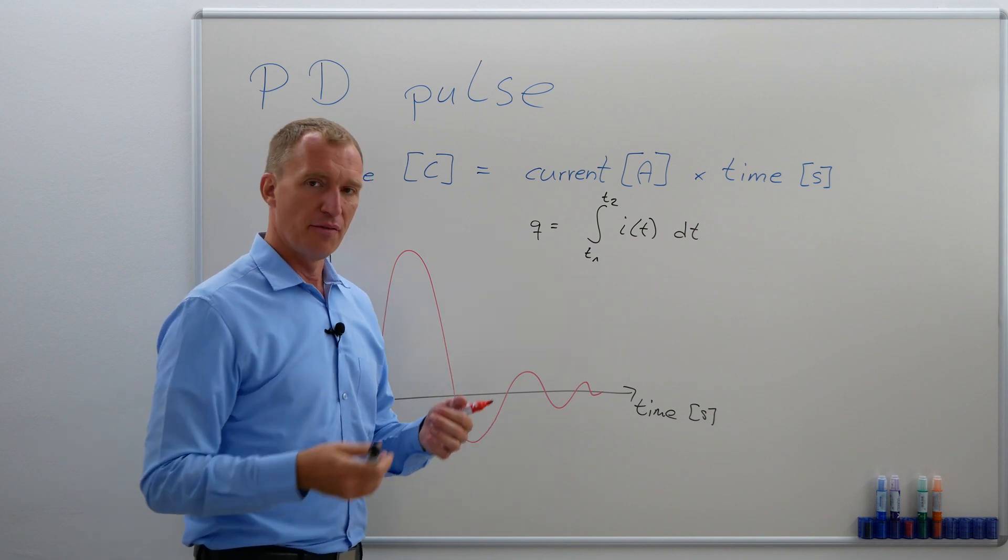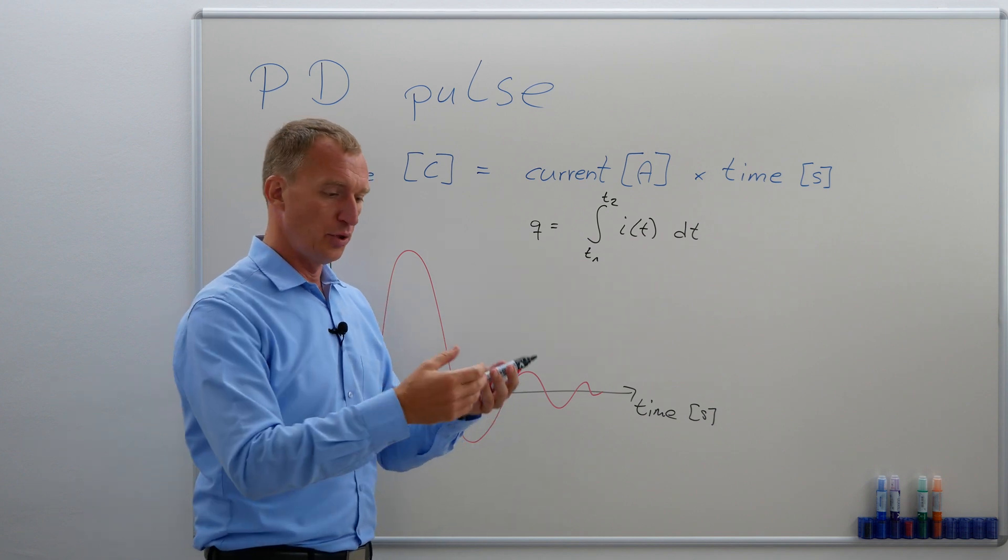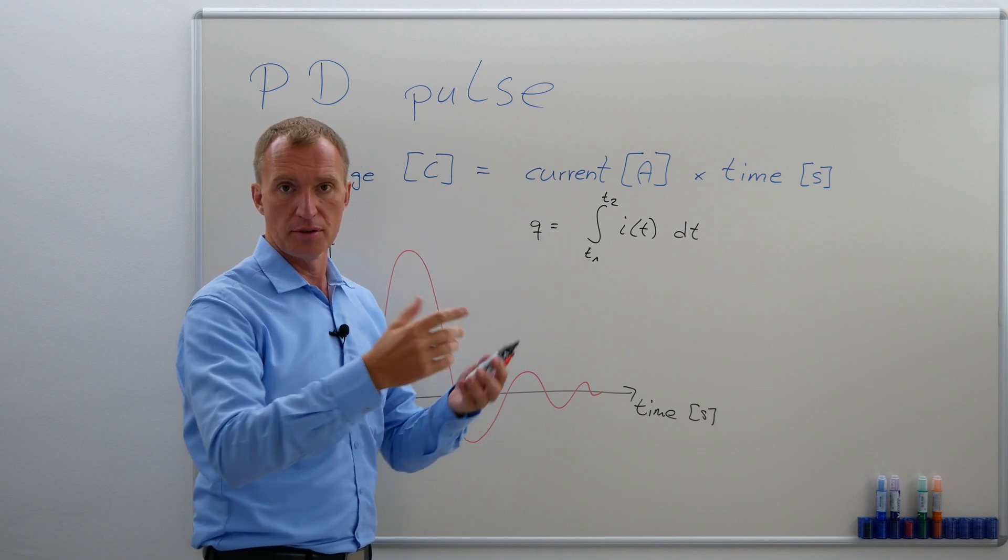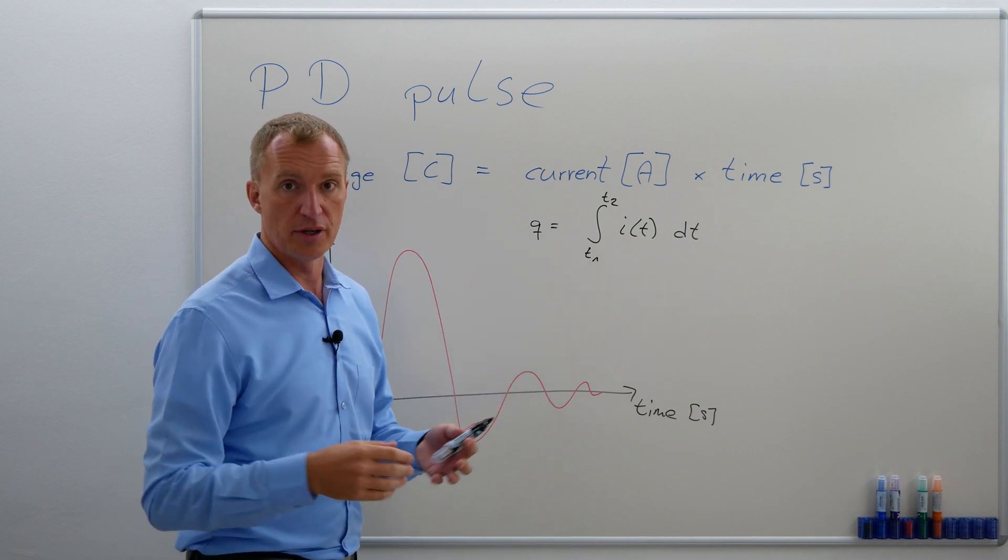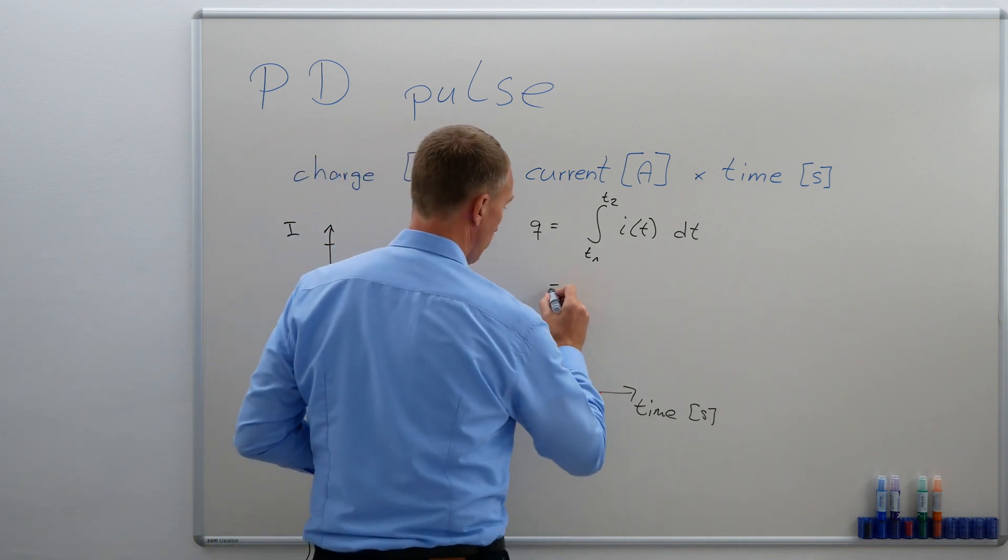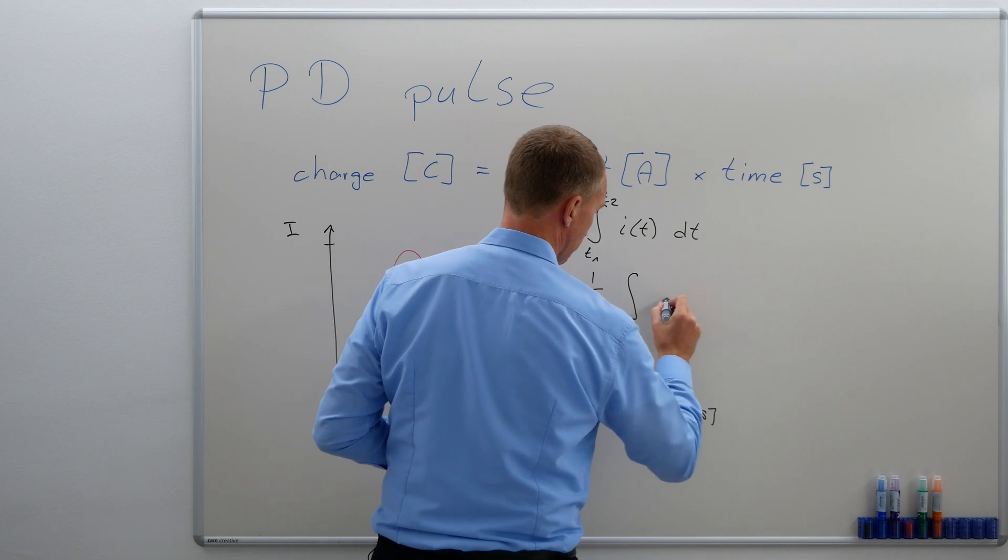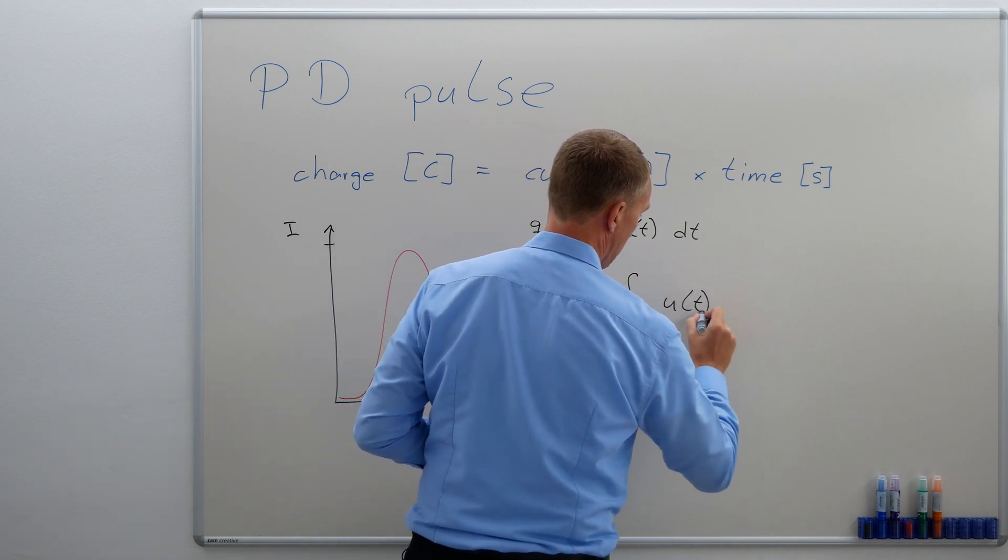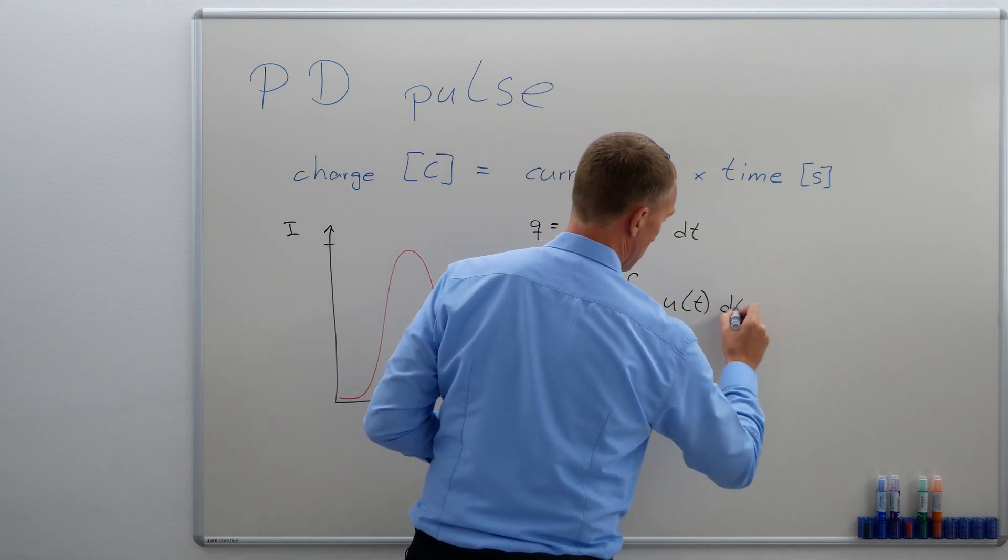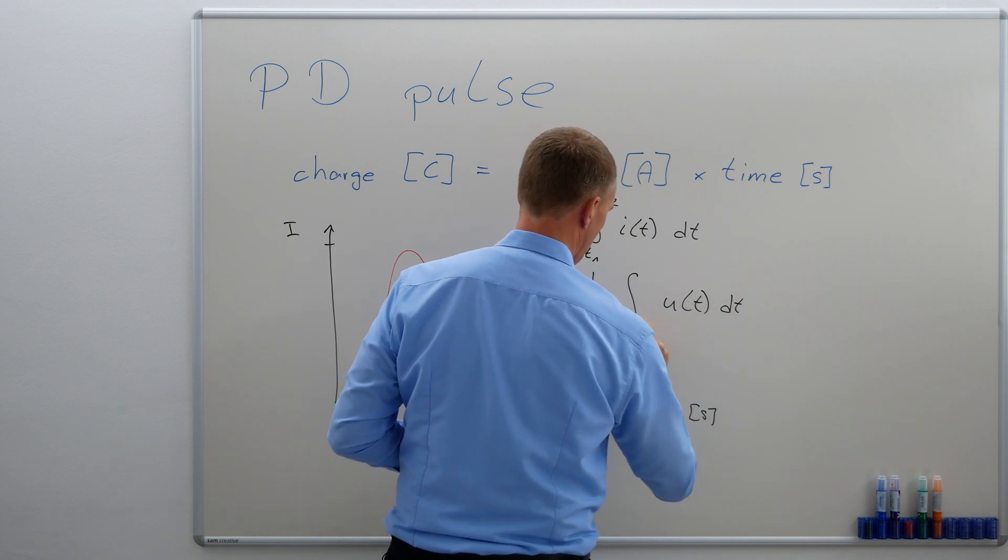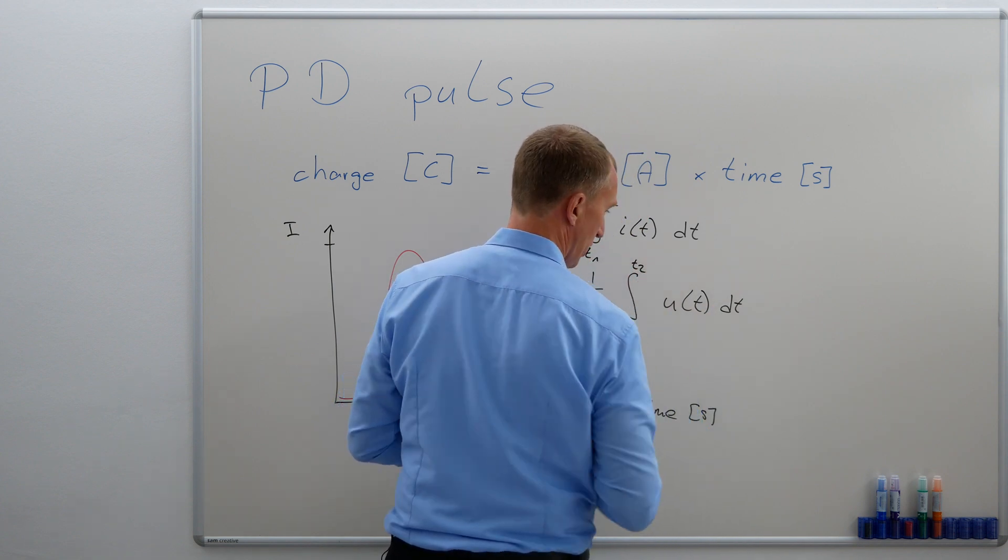And very often if we measure a current, what we do is we use a known resistor, a shunt, and measure the voltage drop over this very resistor. So we would have a 1 over R, and then we would take our voltage signal over time from time 1 to time 2.